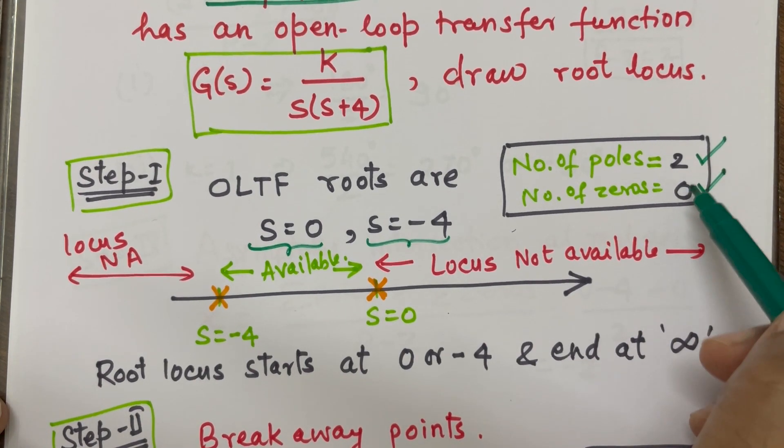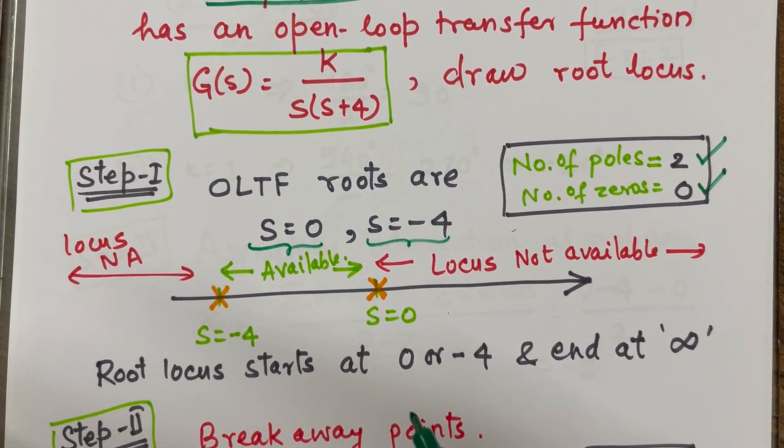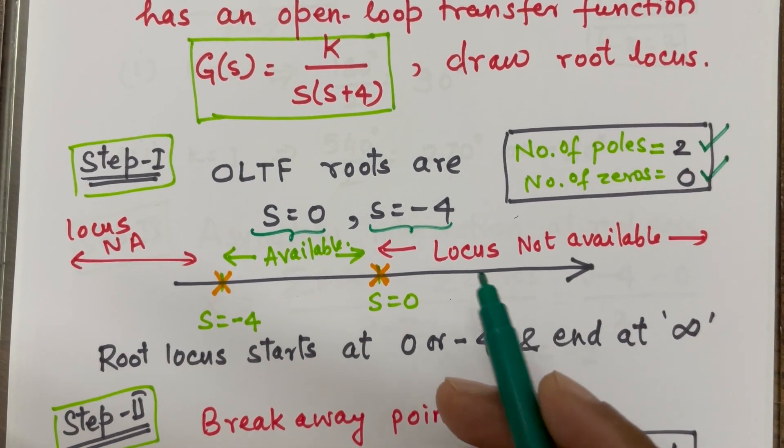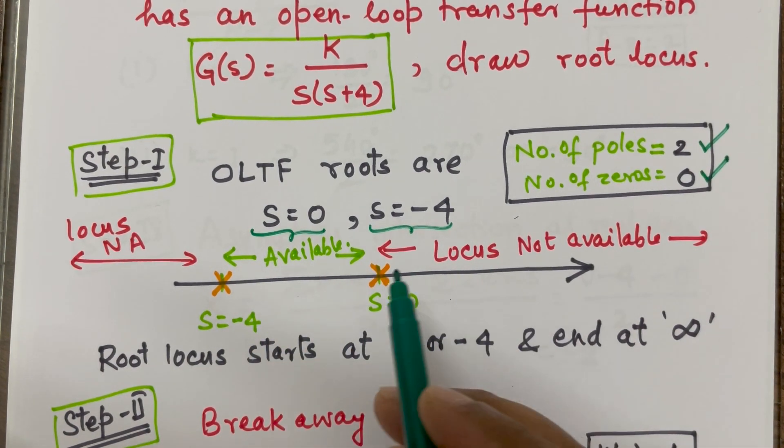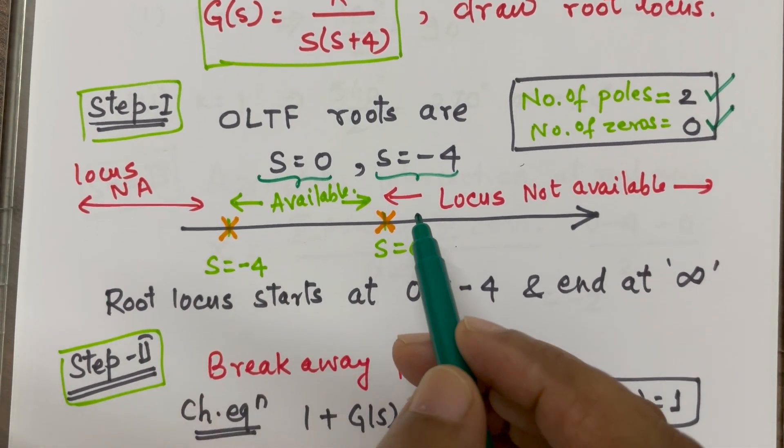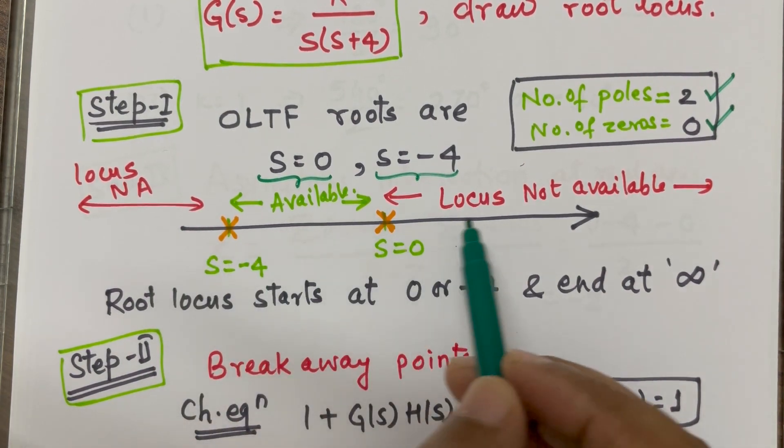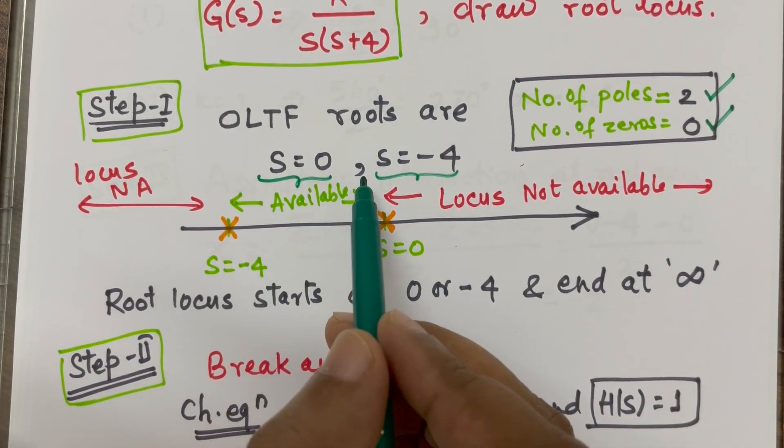So, these are two very important data to identify where will be the root locus. Now, on the real axis, we will be seeing these two points.